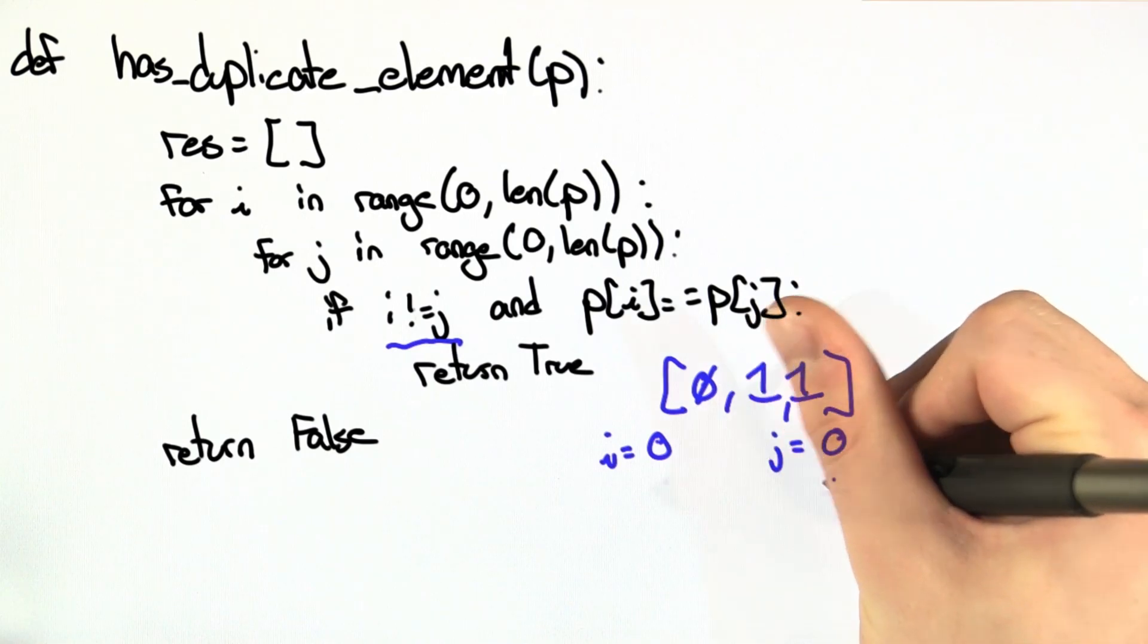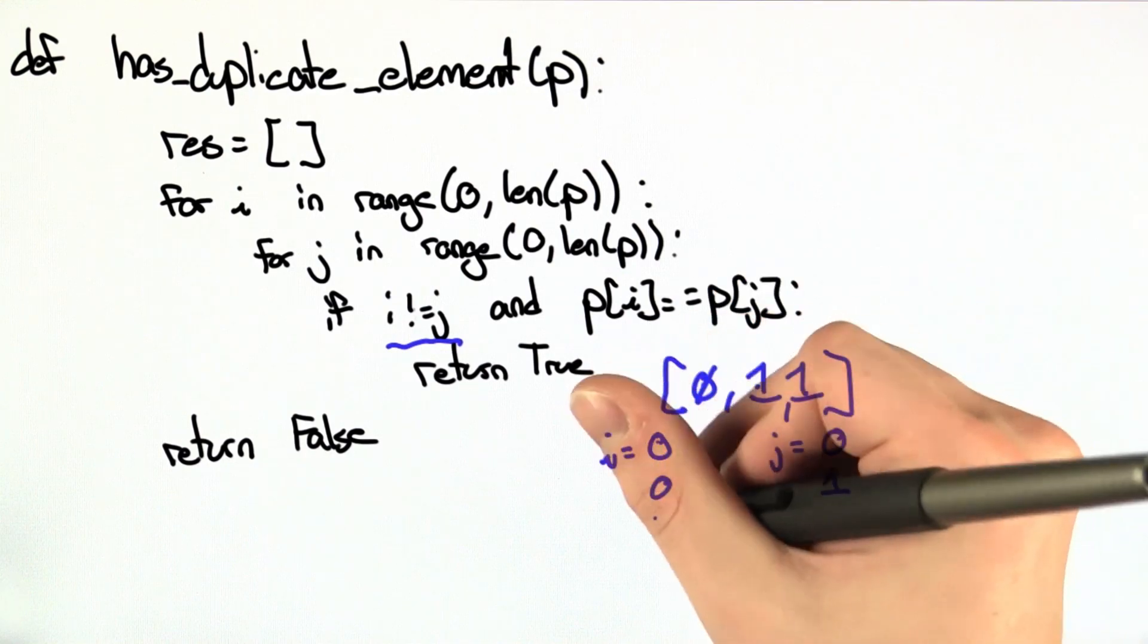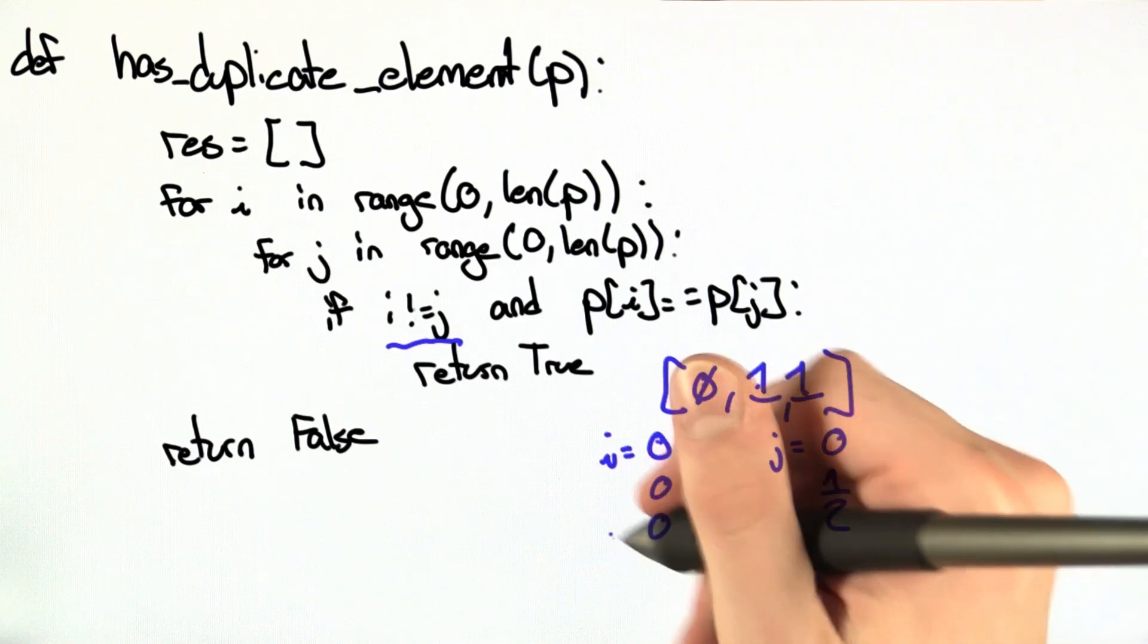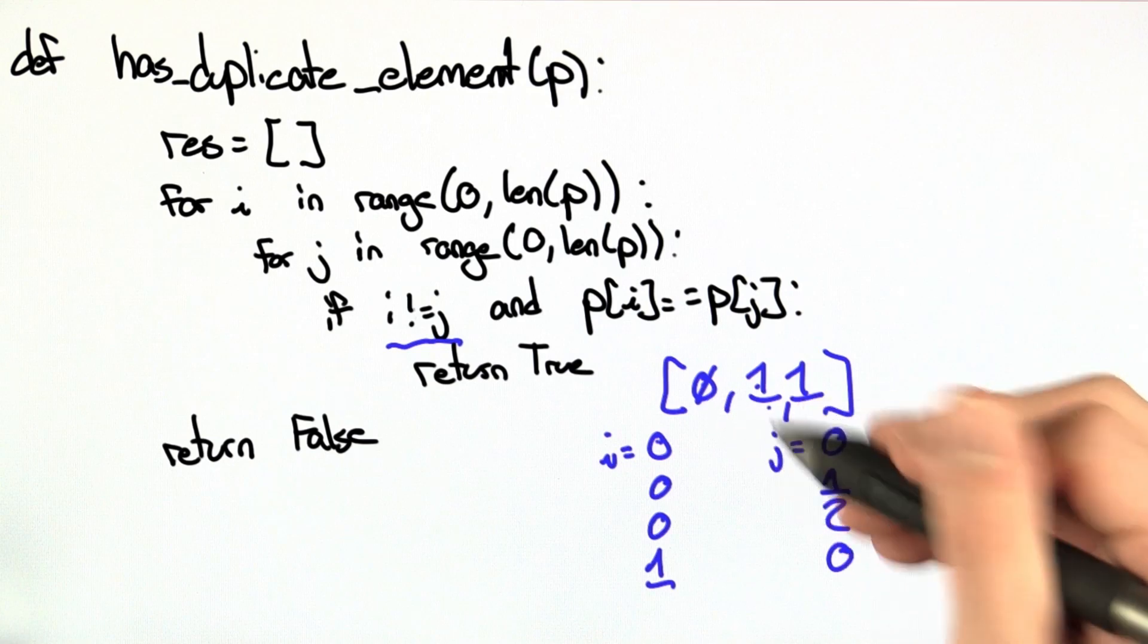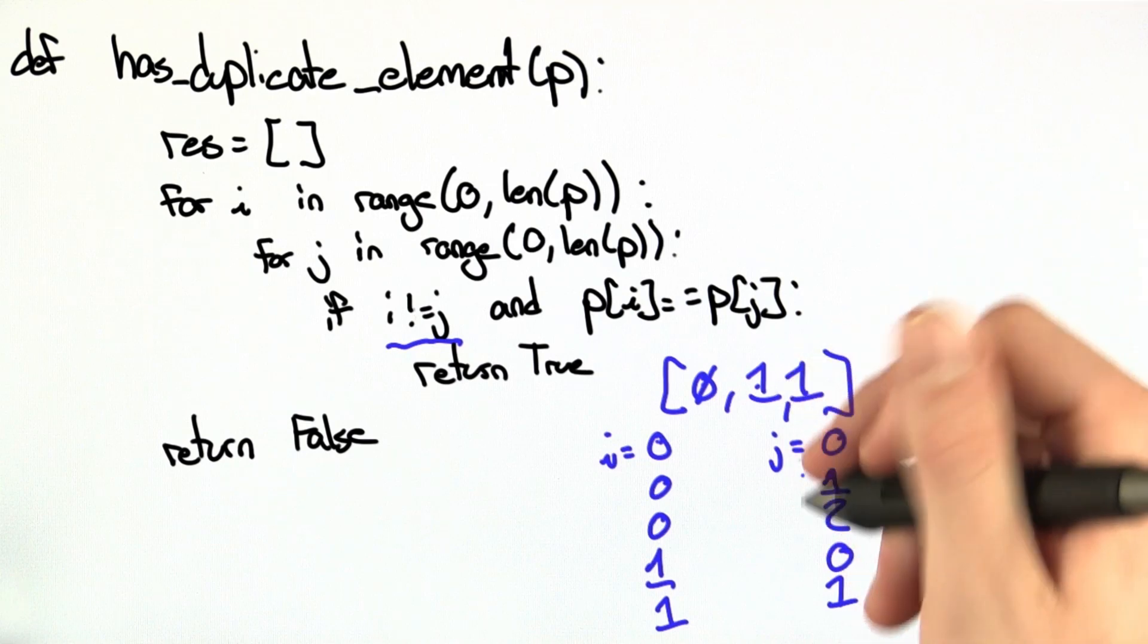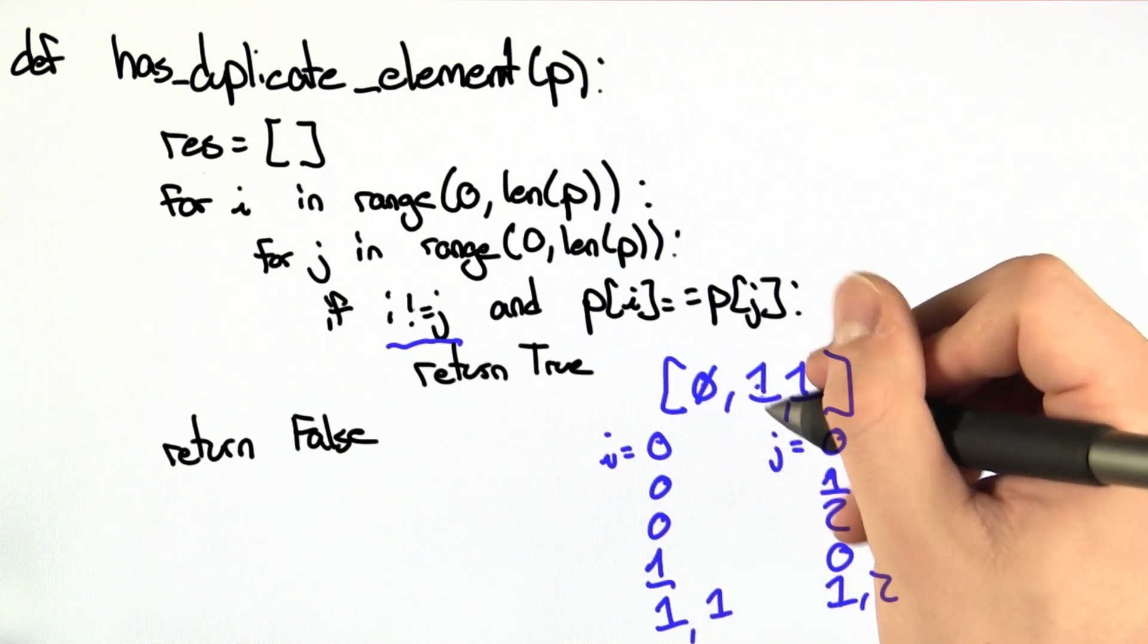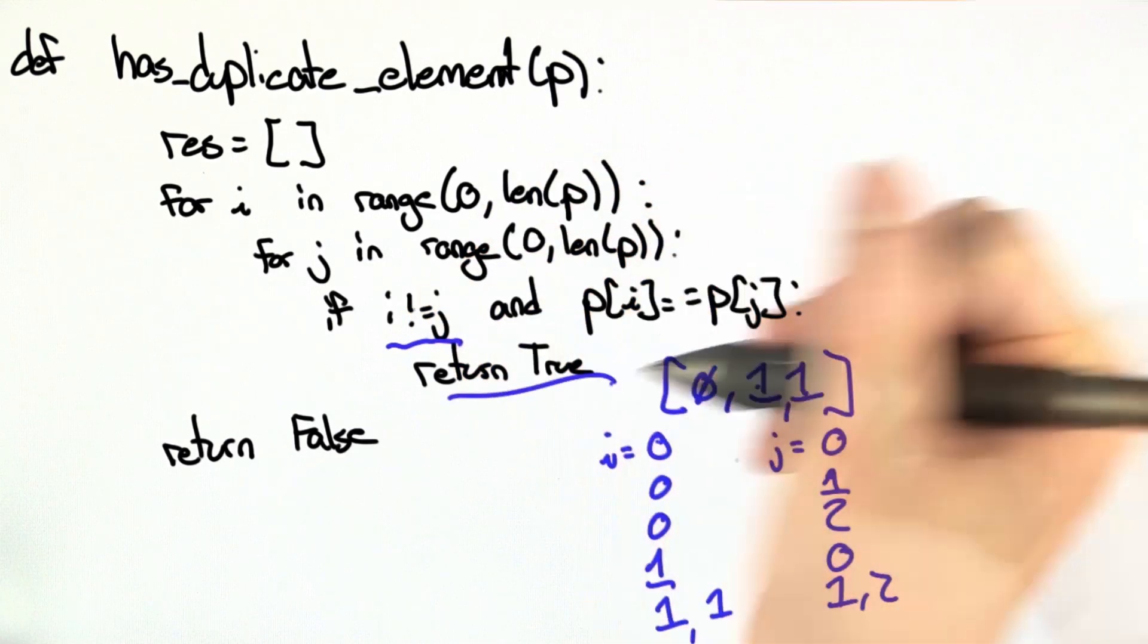So j increments, and now we're comparing the first element with the second element, they're not the same. We do that again. The first element with the third element, they're not the same. We then increment i and reset j. 0 and 1 are not the same. 1 and 1 are not the same. And lastly, we have 1 and then 2. And in this case, the second element and the third element are the same, so we're going to return true. That's how this works.